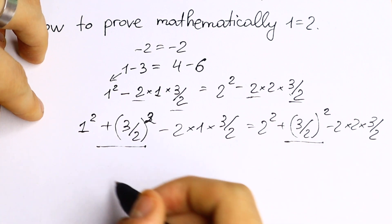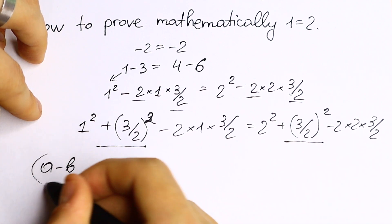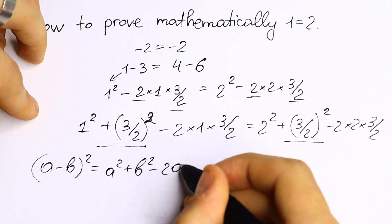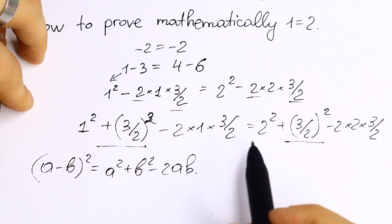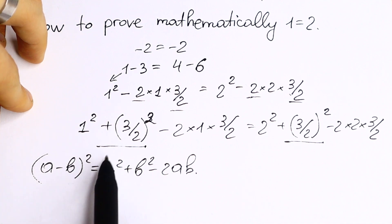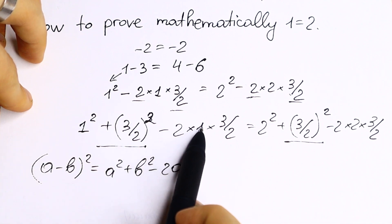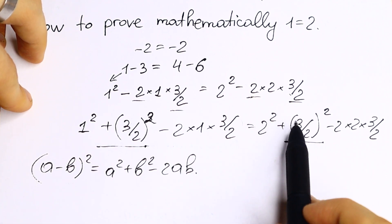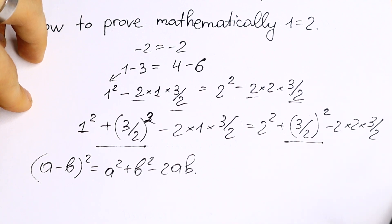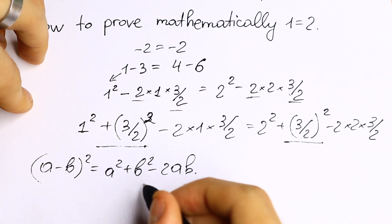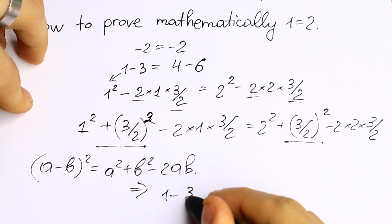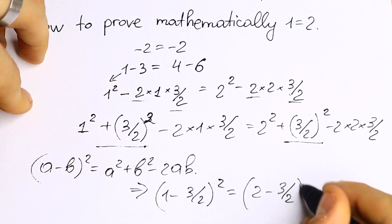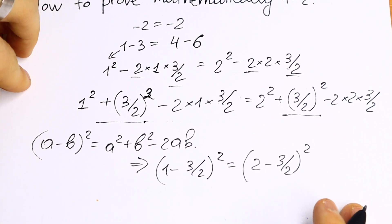What we're going to do next — take a look. We know the formula that (a minus b)² equals a² plus b² minus 2ab. This is our formula. And take a look at what we have: a² plus b² minus 2 times a times b — this is our formula on the left. On the right we have the same: a² plus b² minus 2 times a times b. Using this formula we get: (1 minus 3/2)² equals (2 minus 3/2)².